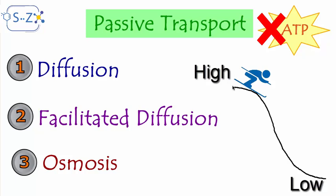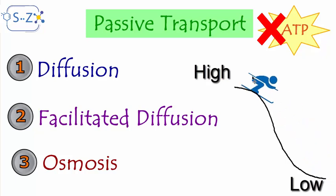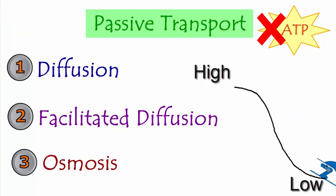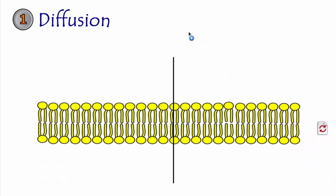What do we mean by not needing energy? Take a skier going down a snow hill — he moves very easily. This is how passive transport works, because molecules move easily with the concentration gradient, meaning from high concentration to low concentration.